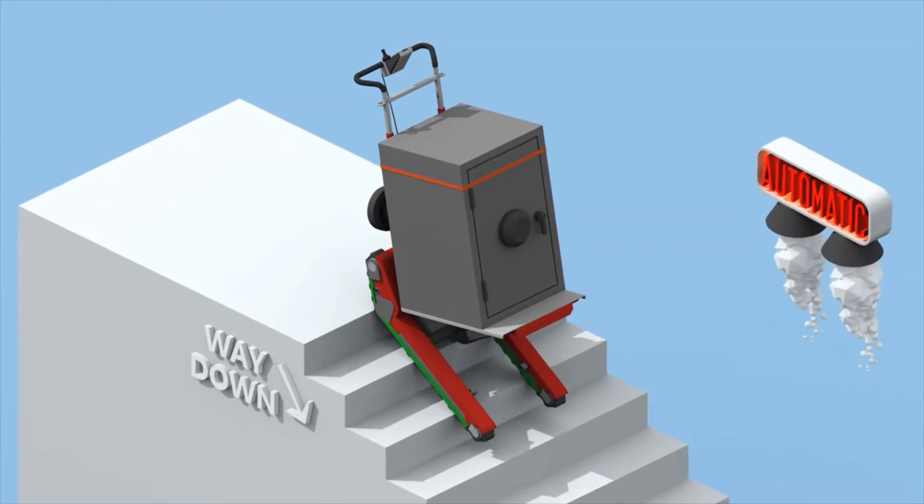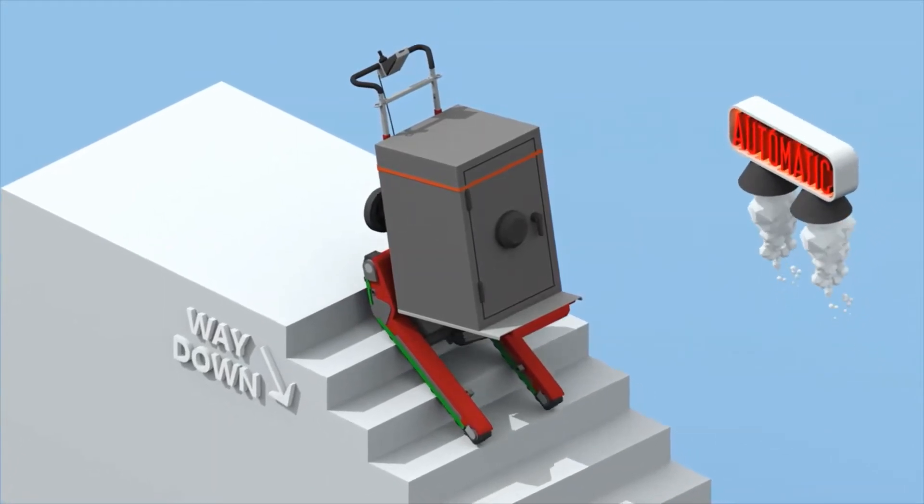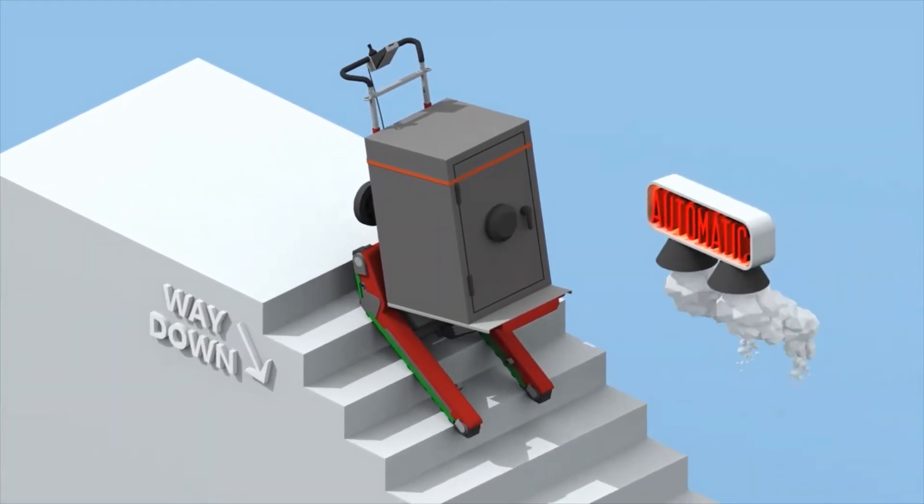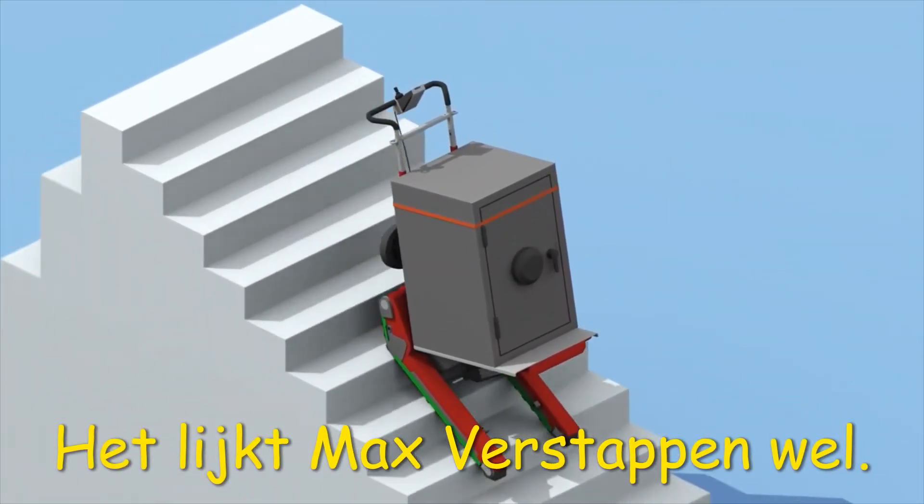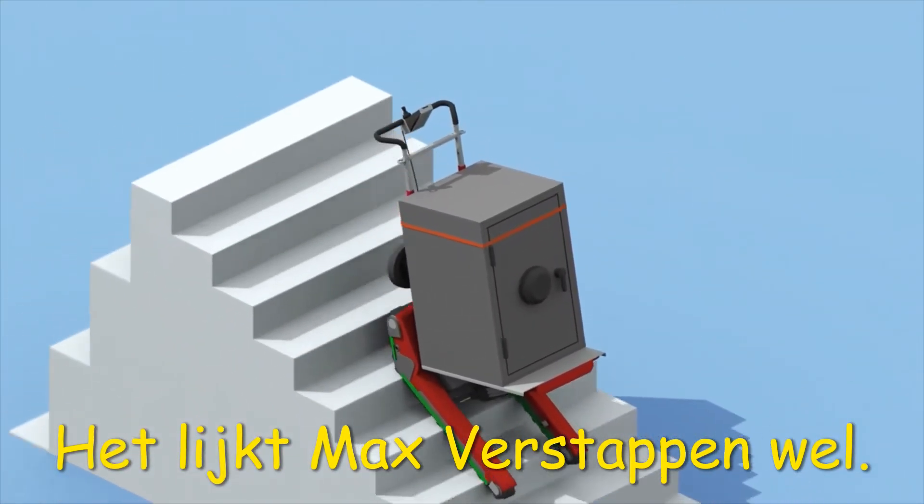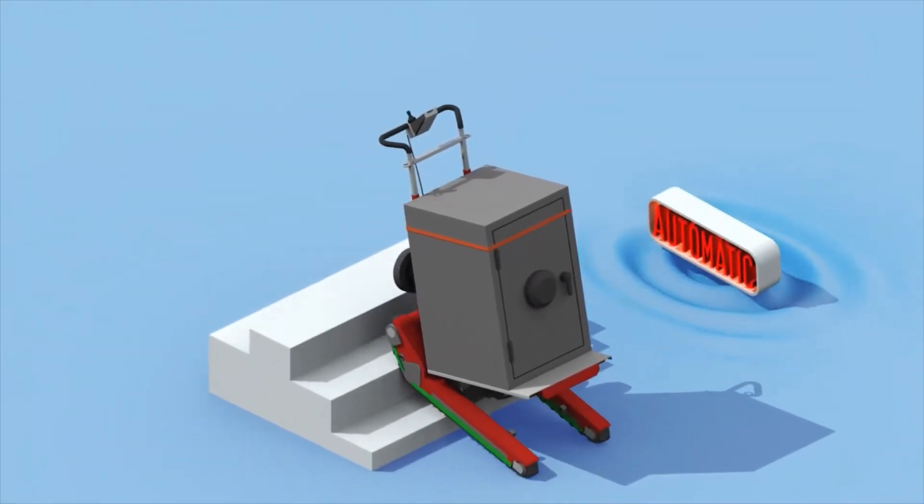When the crawler tracks have touched the second step, start climbing down while checking the position. You already know the rest. Turn off the automatic function, climb down while ensuring you are in control of the machine and turn it back on when you've reached the landing.